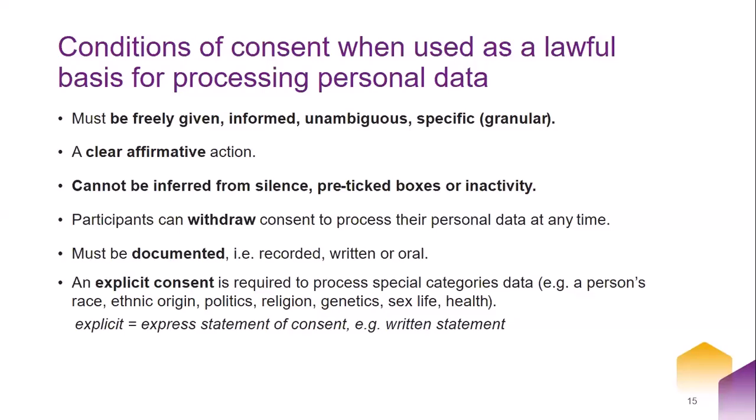Consent must be documented — written or oral — but it should be documented. An explicit consent is required to process special categories data, which includes race, ethnic origin, politics, religion, genetics, or health data. In that case you must obtain explicit consent. Ordinary consent can be obtained verbally or in writing; however, explicit consent should always be recorded or documented.